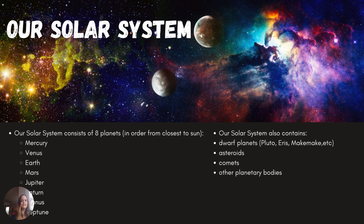Our solar system contains eight planets. Sad Pluto is not a planet anymore as of 2006. The Astronomical Union said that Pluto was not the dominant body in its orbit — it falls within Neptune's orbit at two points in its rotation around the sun. So it's no longer a planet; it's now considered a dwarf planet.